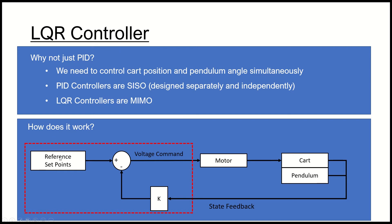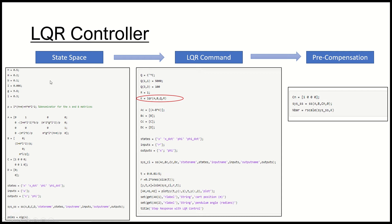We've got the reference set point which is also one by four, and then we'll actually multiply that by a pre-compensator n bar which is four by one. When we do matrix multiplication we'll end up with a one by one matrix which we can then subtract from this state feedback value or the controller value, and that will give us a single voltage command to send to the motor.